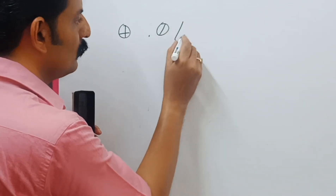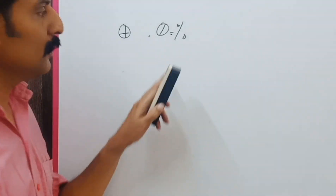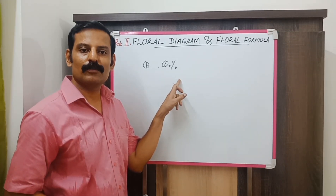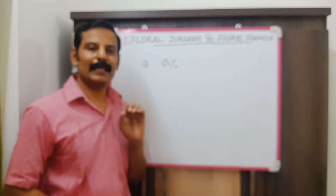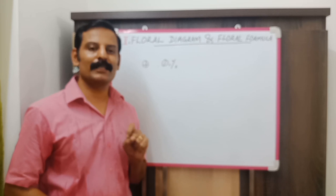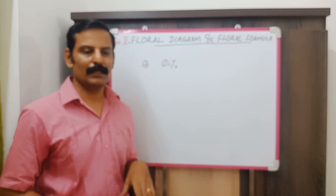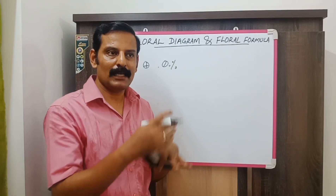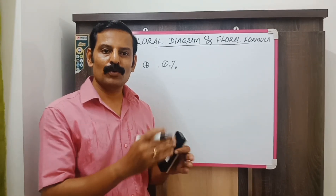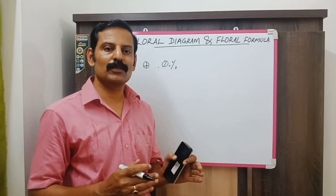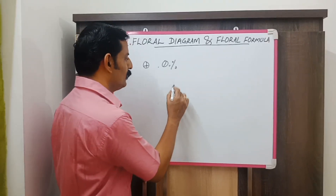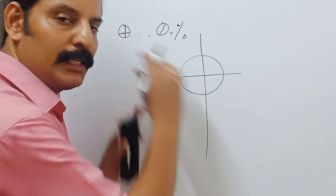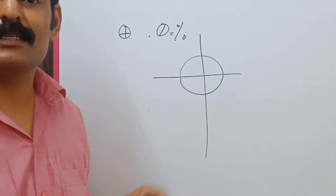The next symbol represents a zygomorphic flower. Zygomorphic flower means you can divide the flower into two equal halves only through one plane. For example, the flowers of pea plants have a special floral structure, so you get two equal halves only through a single plane — either through this plane or through this plane only, not in all planes. Such a flower is known as a zygomorphic flower.